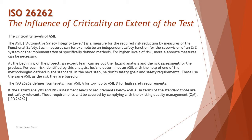There are different levels of ASIL: A, B, C, and D. A link in the description will help you explore more about ASIL. As per ISO 26262, it defines four levels of ASIL starting from ASIL A, which is the lowest, up to ASIL D for the highest safety requirements. If the hazard analysis and risk assessment leads to requirements below ASIL A, those are not safety relevant and will be covered by the existing quality management process.